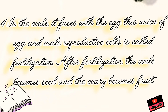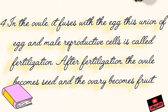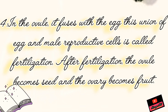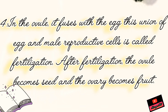Fourth point: in the ovule, it fuses with the egg. This union of egg and male reproductive cells is called fertilization. After fertilization, the ovule becomes a seed and the ovary becomes a fruit.